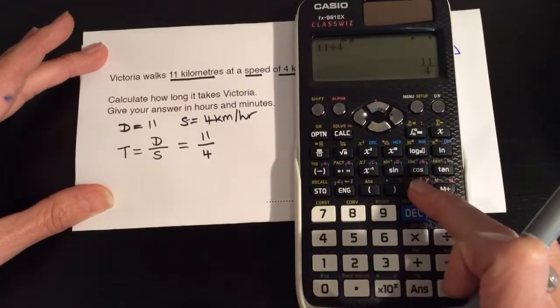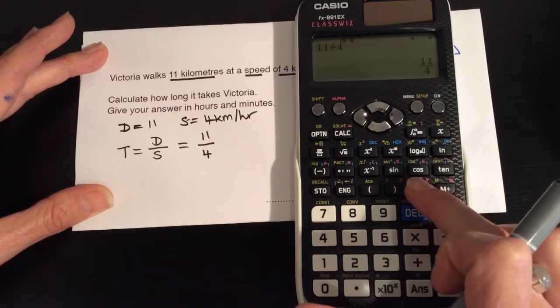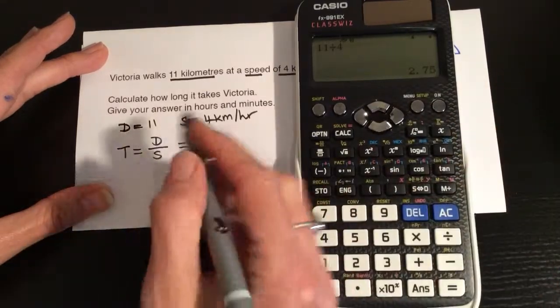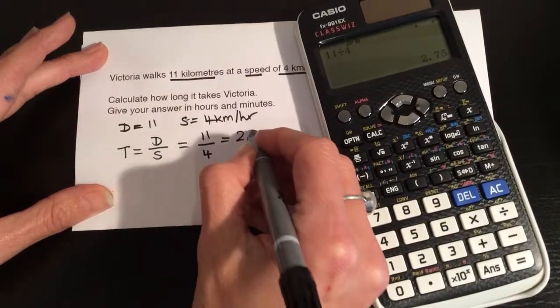But if we press this button here with the S and the D on it, that changes between fractions and decimals. Now it's 2.75.